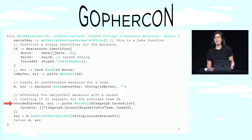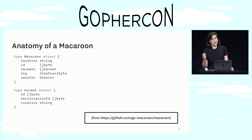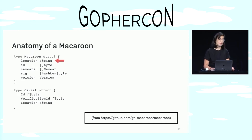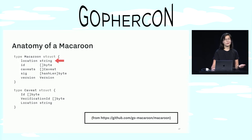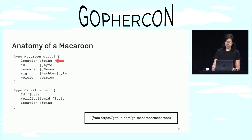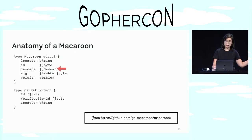So what's going on in that package — what's going on behind the scenes? This is what a macaroon looks like under the hood. The location is a hint that tells users where this macaroon is accepted — we actually left it blank at Chain since we only ever had one target service. The ID is a unique identifier, and the caveats are slices of caveat objects that the macaroon has.